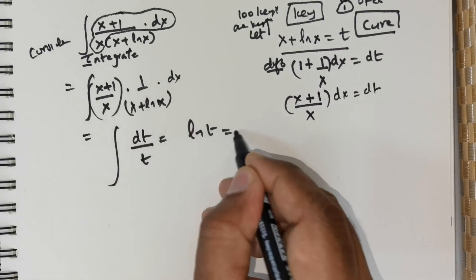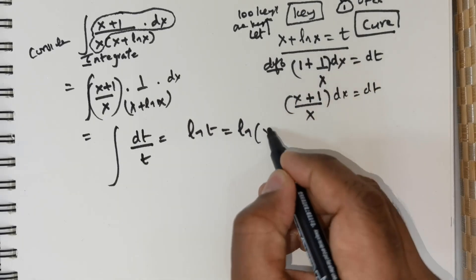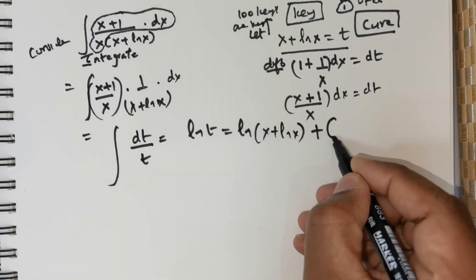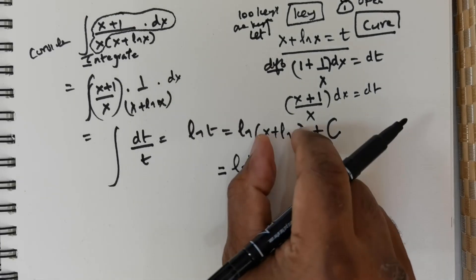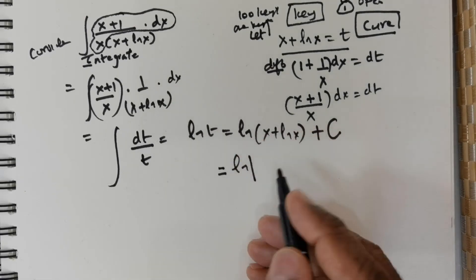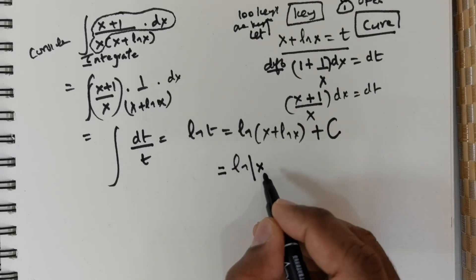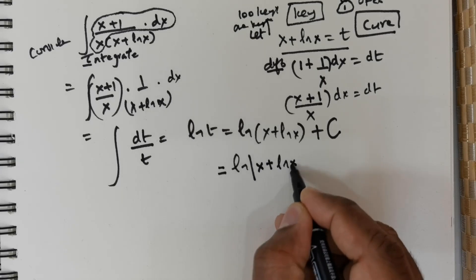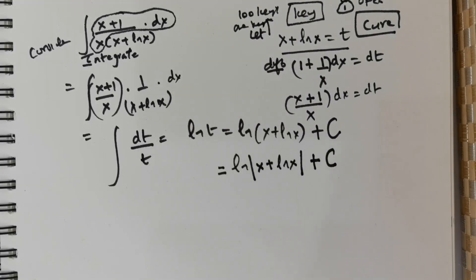This is nothing but ln t. But what is my t? My t is x + ln x. Now some people will accept this as a solution, but to be on the safe side, it is always better to place this component within the absolute sign. So ln of modulus of (x + ln x), followed by arbitrary constant C.